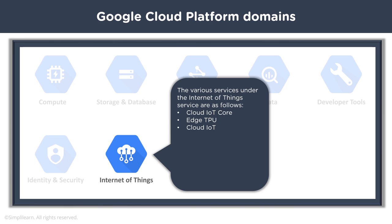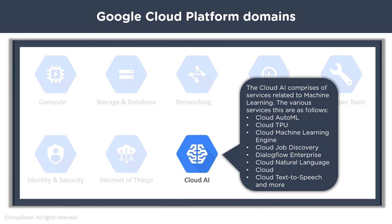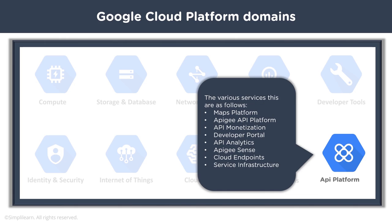GCP also has Cloud IoT services — including Cloud IoT Core, Edge TPU — for organizations working on IoT devices and their data. The Cloud AI domain includes Cloud AutoML, Cloud TPU, Cloud Machine Learning Engine, Dialogflow Enterprise, Natural Language, and Cloud Text-to-Speech. For the API Platform domain there are Maps Platform, API Platform Monetization, Developer Portal, API Analytics, Apigee, Cloud Endpoints, and Service Infrastructure.